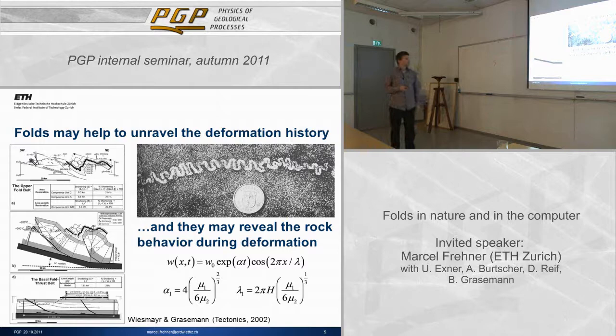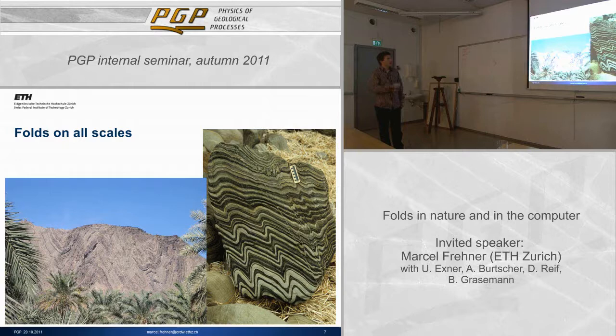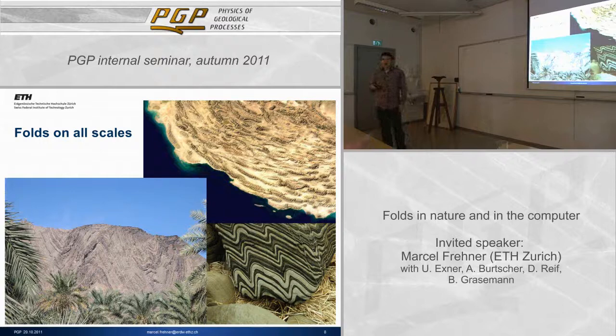Folds occur on all scales — not only on the outcrop scale, but also at larger scales. This picture from southern Iran in the Makran area shows beautiful folds on a scale of maybe one kilometer. We also find entire mountain chains built up of folds, such as this satellite image of the Zagros Mountains in Iran, where an entire mountain range consists of these folds.